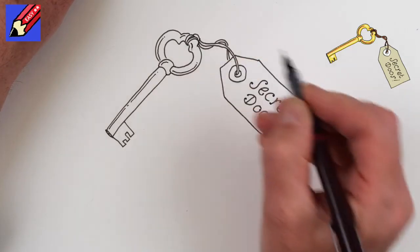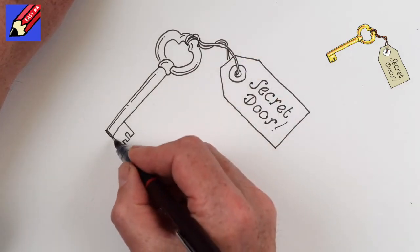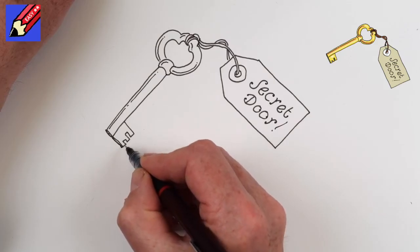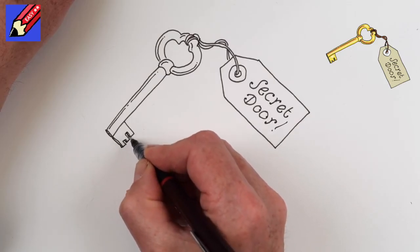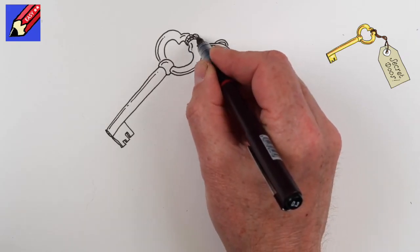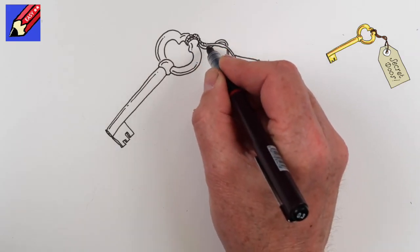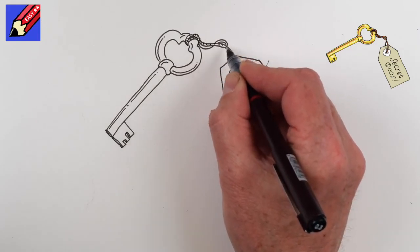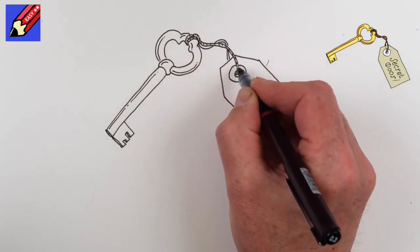Like that, and a dot there too. I'm going to make that look a little bit 3D. We want to put a bit of a twist into the string like that, so just put these little marks in.